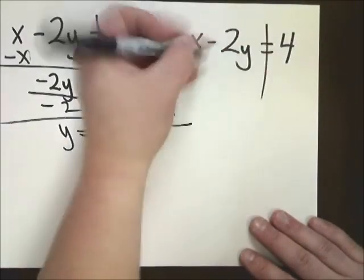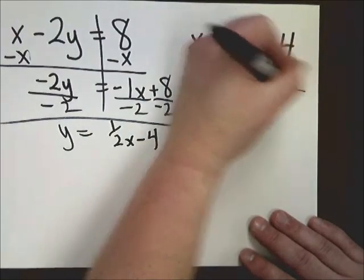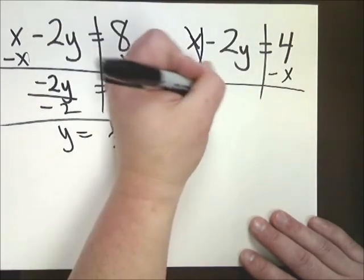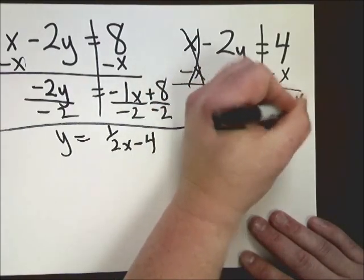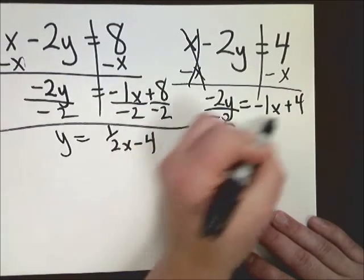On the other side, I need to subtract X. Negative 2Y equals negative 1X plus 4. I'm going to divide by negative 2. Y equals 1 half X minus 2.